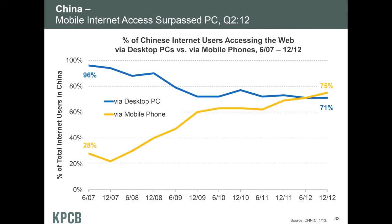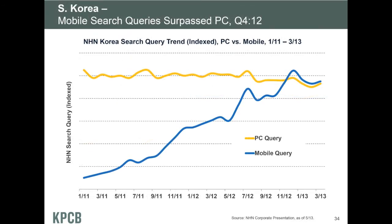Going forward, mobile internet access — that is, access to internet from mobile devices as opposed to desktop PCs — has been a very important parameter. The amount of access from mobile phones now exceeds that from desktop PCs in China, a very large developing country. And in a developed country such as Korea, the number of search queries coming from mobile devices is rapidly increasing and has in fact exceeded the number of queries coming from PCs over the last year and a half.